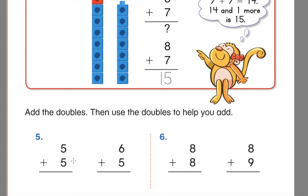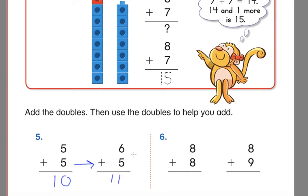Let's go over number five. We actually just did five plus five on the last page, so it should be fresh in our heads — five plus five is ten. Then they took the same five and put a six instead of another five, and six is just one more. So if six is one more than five, our answer is going to be one more than ten — and one more than ten is eleven. Now go ahead and do number six all on your own, and I'll give you a minute.